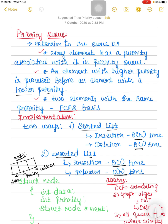The general rule in the priority queue is that an element with higher priority is processed first before an element with lower priority. If there are two elements with the same priority, they will be processed on a first come first serve basis — the element which appeared first will be processed first.